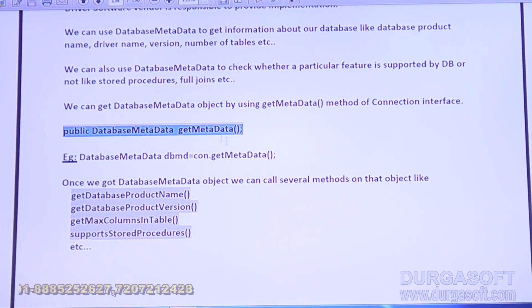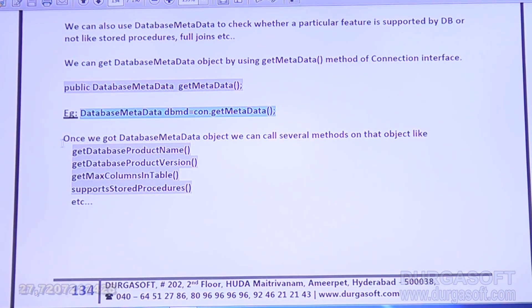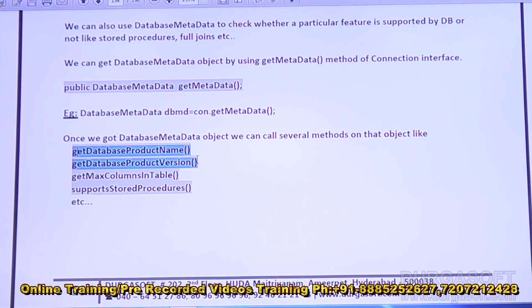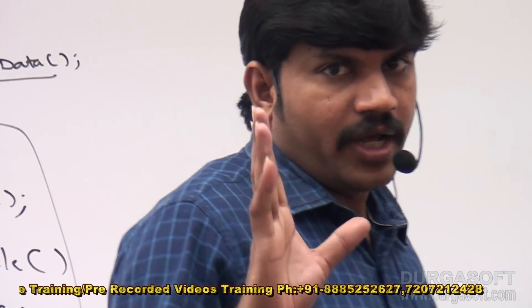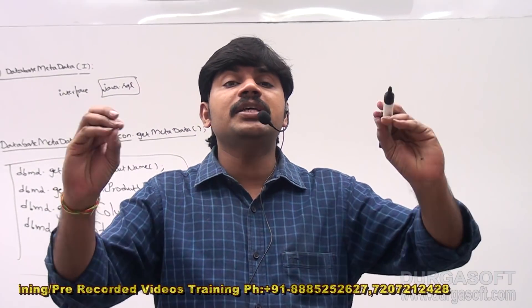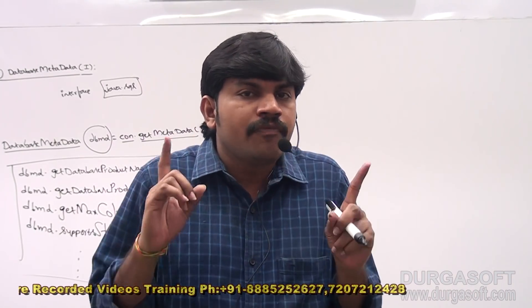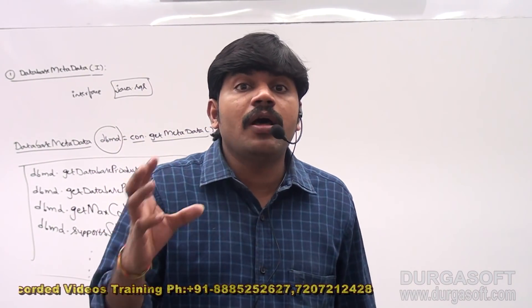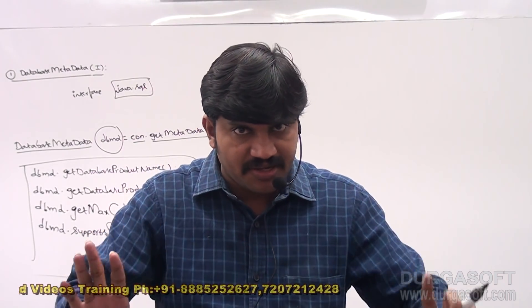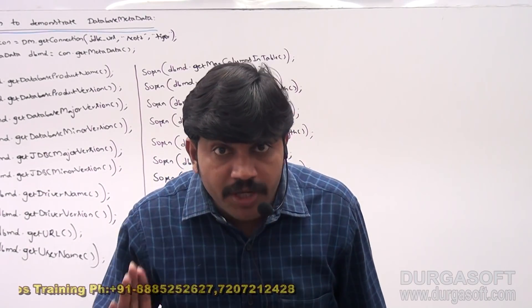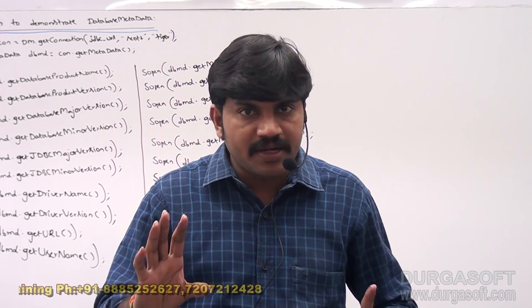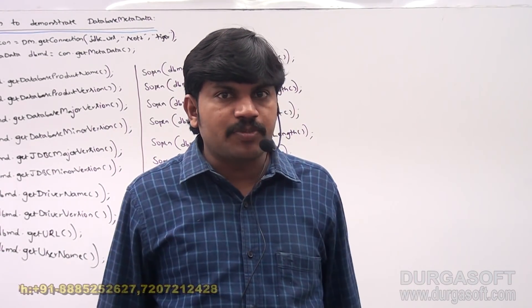We can get the DatabaseMetaData object using the getMetaData() method of the Connection interface. The complete prototype is: DatabaseMetaData dbmd = con.getMetaData(). Once we have the object, we can call several methods such as getDatabaseProductName(), getDatabaseProductVersion(), getMaxColumnsInTable(), and supportsStoredProcedures().